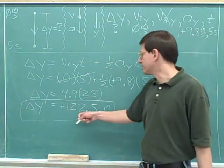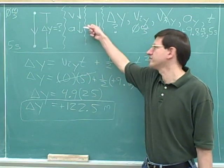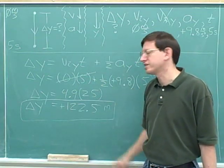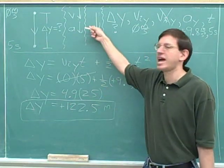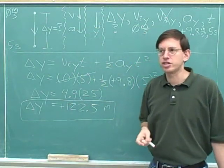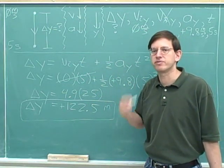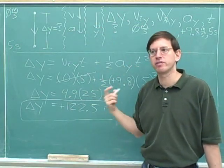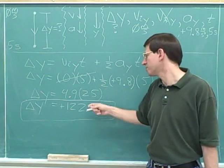So the answer here is that our displacement was positive 122.5 meters. By the way, notice that this answer is useless unless you also tell the reader what your positive direction is. It doesn't do the reader any good to tell them that the displacement is positive 122.5 meters if you don't tell them, by the way, I chose down to be the positive direction. So this is just one more reason why whenever you're solving a problem, you shouldn't just choose the positive direction in your head. You should write down the positive direction. That helps you when you're solving the problem. And also that helps whoever is looking at the problem afterwards to interpret it.